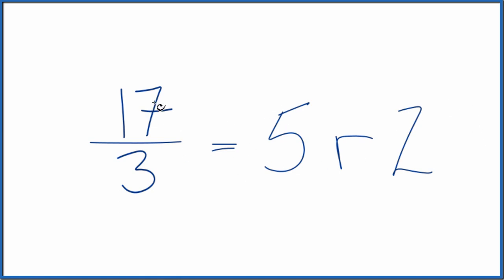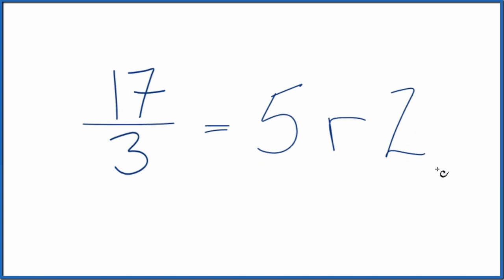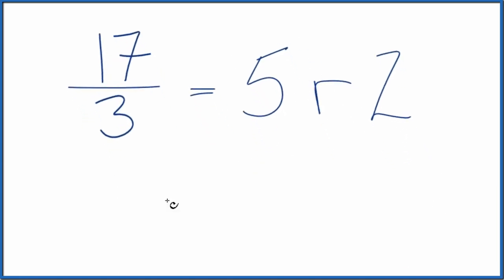So we could call 17 thirds 5 with the remainder of 2. And now we can write our mixed number. We take the whole number, the 5 here, and then the 2, that becomes the numerator. The 3, we get that from the original denominator, from our original fraction here.